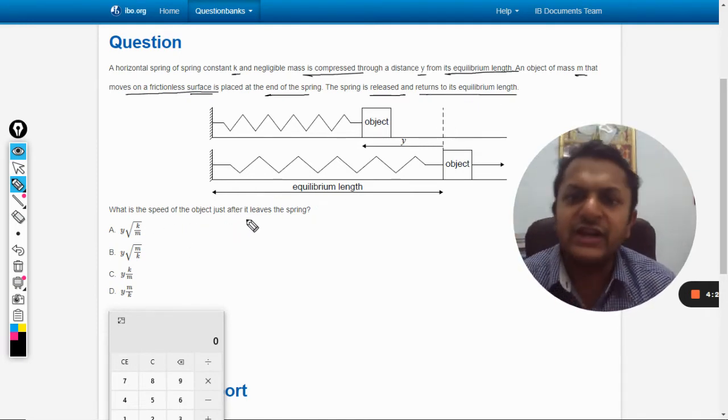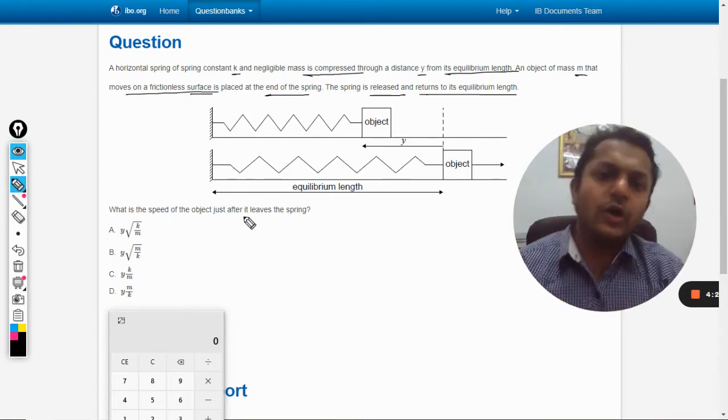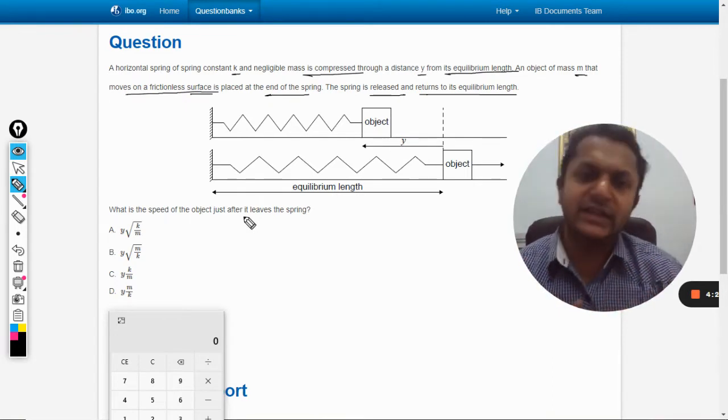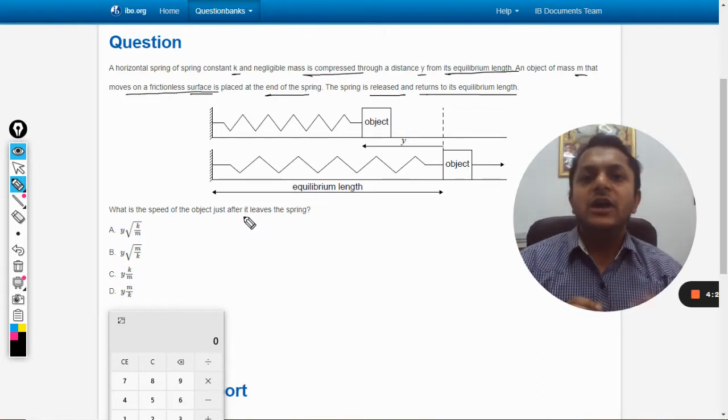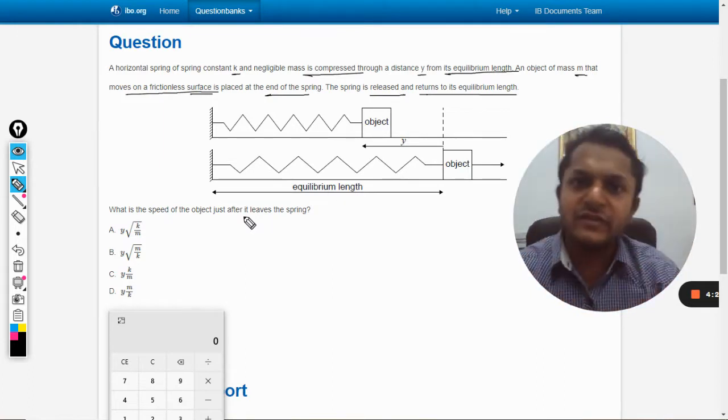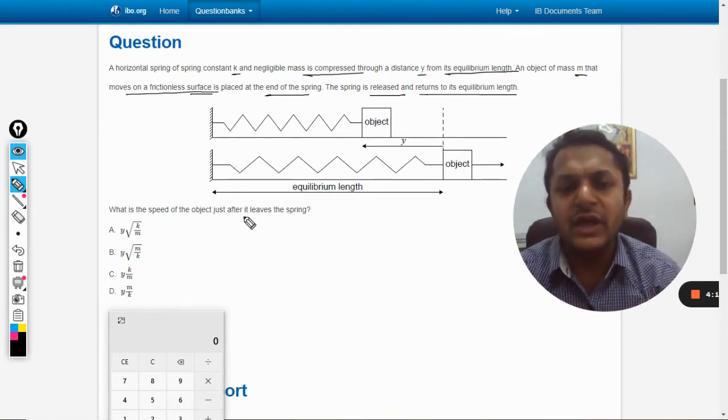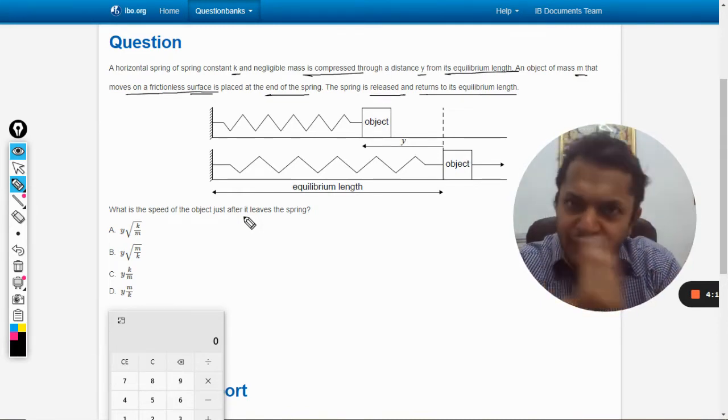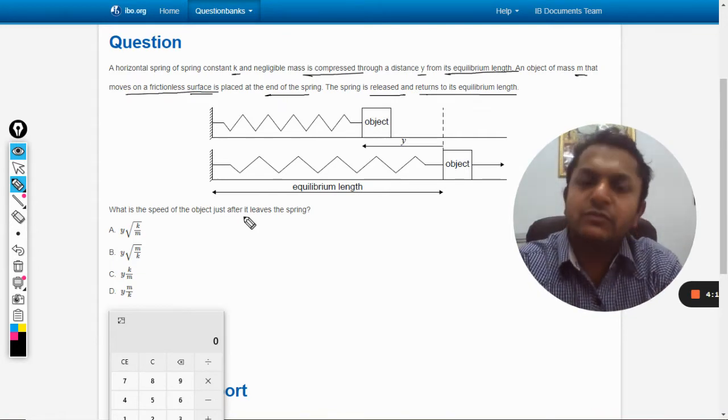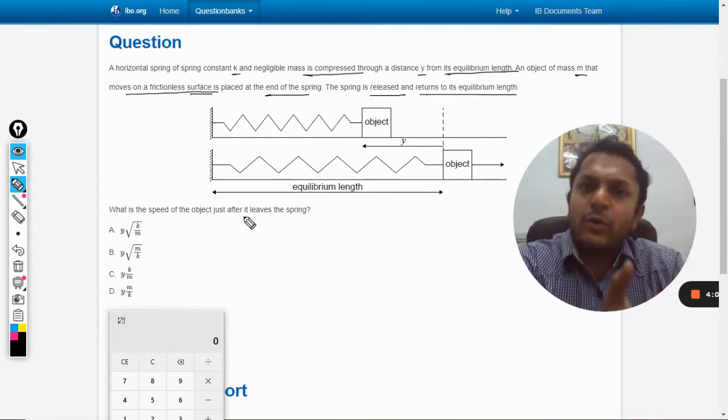What is the speed of the object just after it leaves the spring? So the question is that there is a spring and there is a mass at the end of the spring. We have compressed the spring, so obviously work is done and the energy is stored in the spring as potential energy. Then, after we have reached the extreme position, we leave it and the body comes back to the mean position.